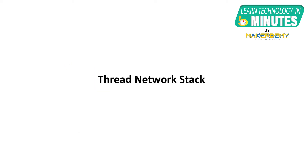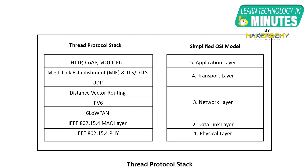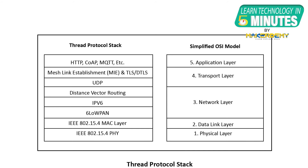Let us now dive into the Thread network stack. This is a diagram of a typical Thread stack as compared to a typical TCP/IP stack that uses the OSI or Open System Interconnected Model. The Thread network stack uses IEEE 802.15.4 for the physical and MAC layers. It operates in the 2.4 GHz frequency band and supports radio modules like ZigBee and WirelessHART. In the higher layers, as it uses 6LowPAN, it has the benefits of header compression, IPv6 addressing, and fragmentation scheme. Additionally, the Thread stack has two more components: distance vector routing and mesh link establishment. Thread uses UDP with IP routing, which offers faster packet delivery.